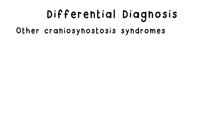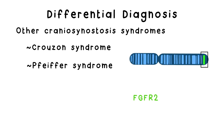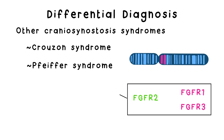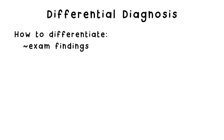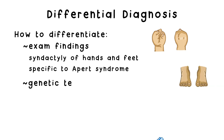The main conditions in the differential diagnosis of Apert Syndrome are the other craniosynostosis syndromes, which include Crouzon Syndrome, Pfeiffer Syndrome, and others. Interestingly, many of these syndromes are caused by either different mutations in FGFR2 or by mutations in the related receptor genes FGFR1 and FGFR3, underscoring the importance of these genes in skeletal development. These syndromes can be differentiated from one another based on exam findings — for example, none has such severe hand and foot findings as in Apert Syndrome — or by genetic testing.